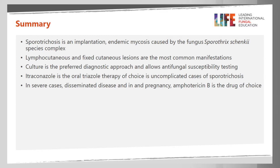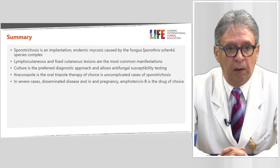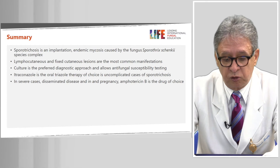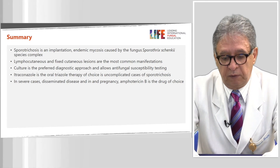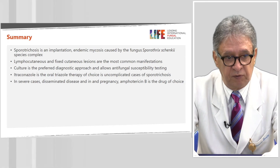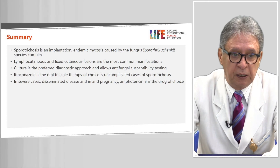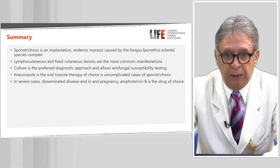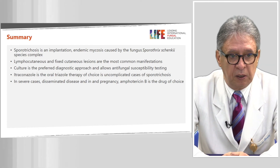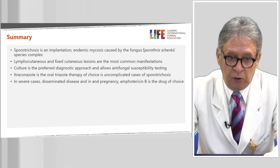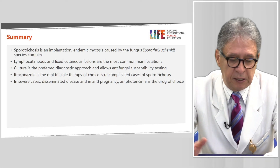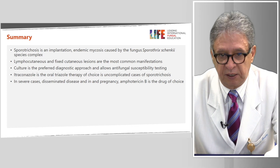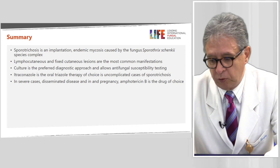If you have pulmonary, meningeal, disseminated forms, or patients who are pregnant, the treatment of choice is amphotericin B and you can combine it with itraconazole. In children you can use either itraconazole or oral potassium iodide — if you use itraconazole the dose is about 6 to 10 mg per kg per day, with a maximum dose of 400 mg. In summary, sporotrichosis is an implantation mycosis, endemic, caused by the Sporothrix schenckii complex. Lymphocutaneous and fixed cutaneous lesions are the most frequent manifestations. The gold standard for diagnosis is culture, which also allows antifungal susceptibility testing. Itraconazole is the oral treatment of choice for cutaneous cases, and amphotericin B alone or combined with itraconazole is used for severe cases. Thank you very much for your attention.